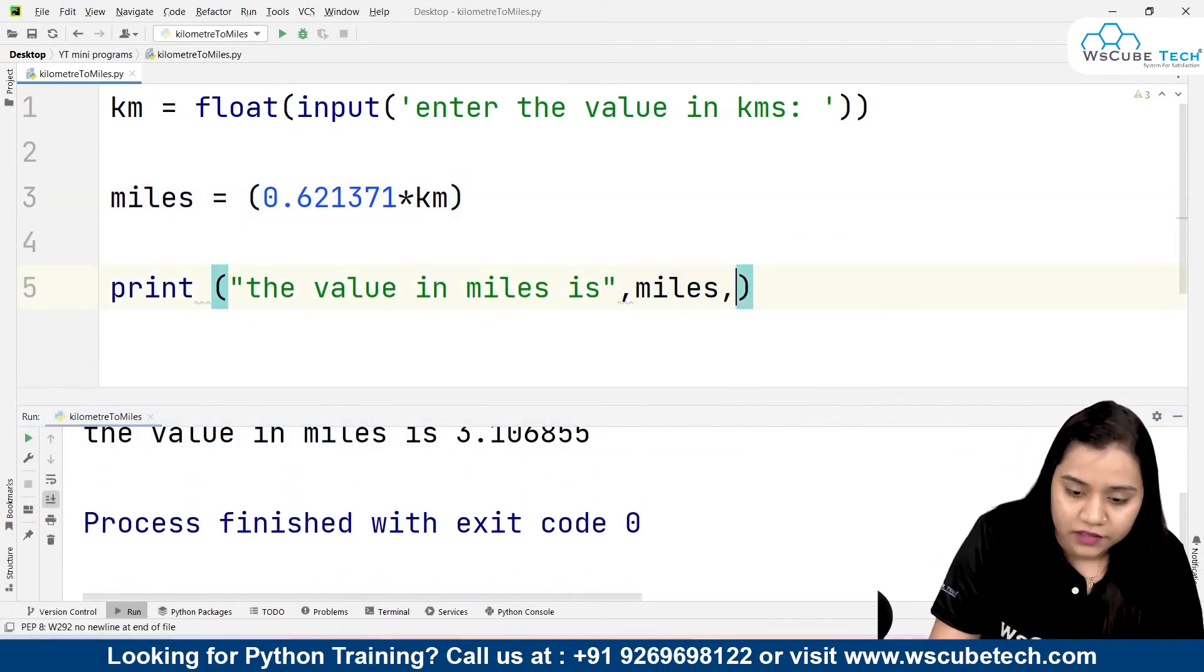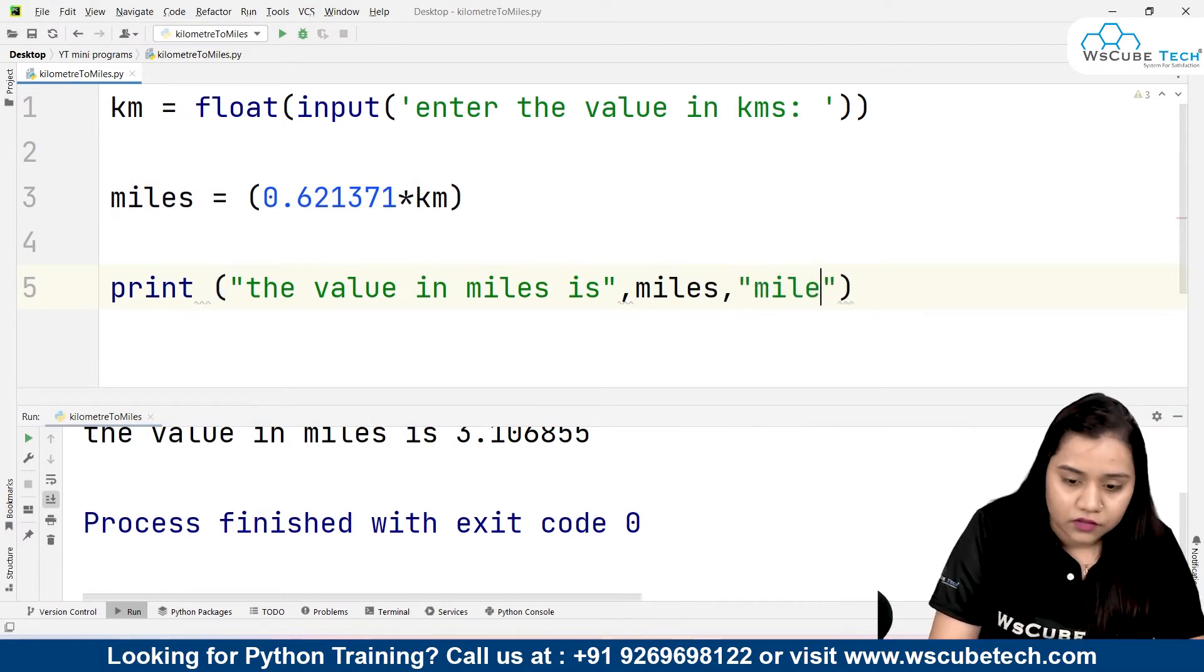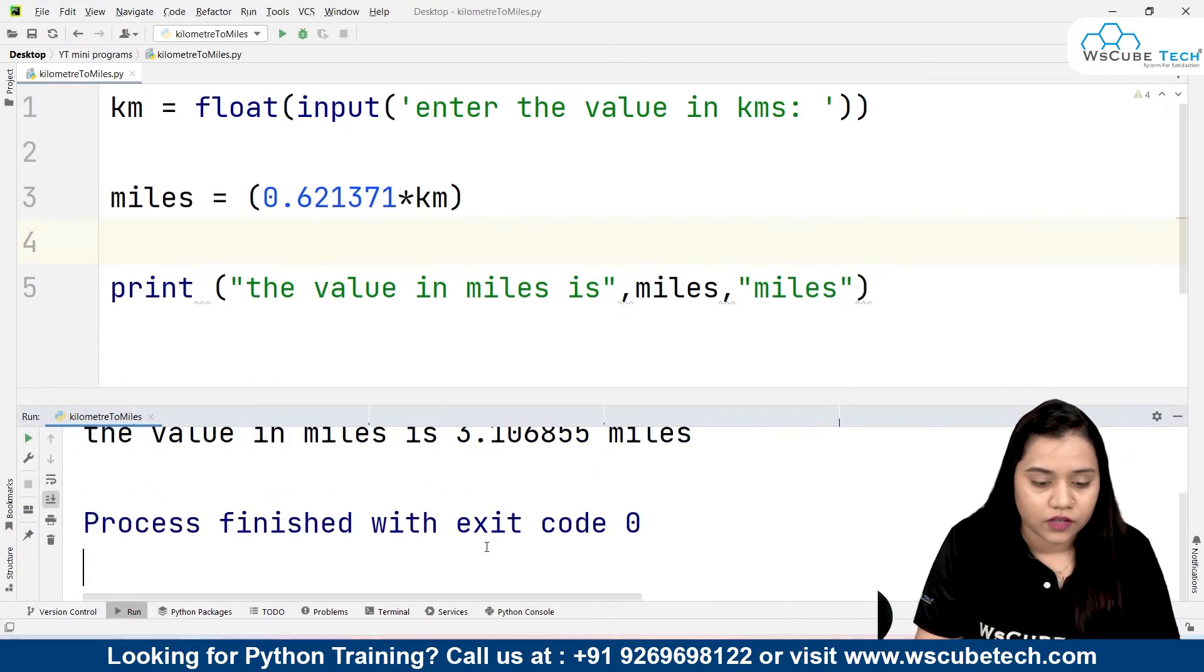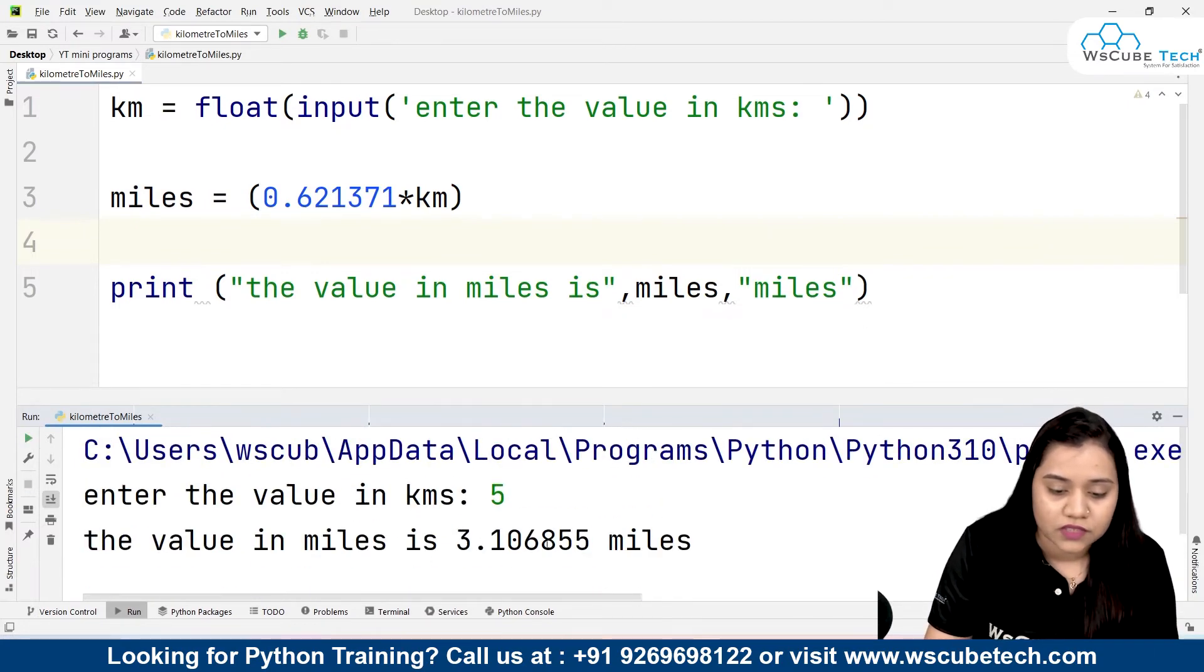If you want, you can add the unit miles also over here. So we will be writing miles, and again if I give five, it would look like the value in miles is 3.10685 miles.